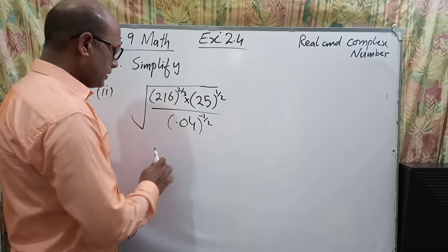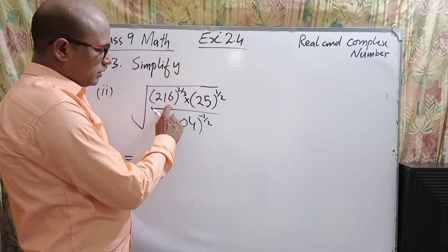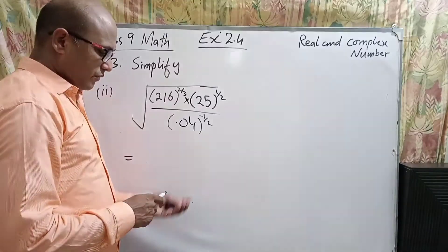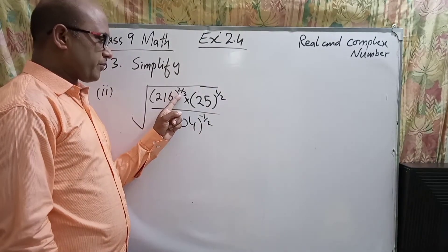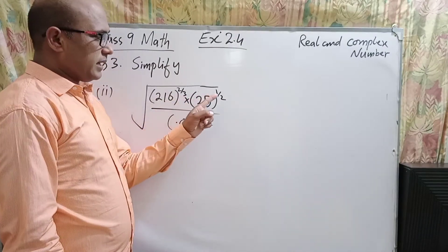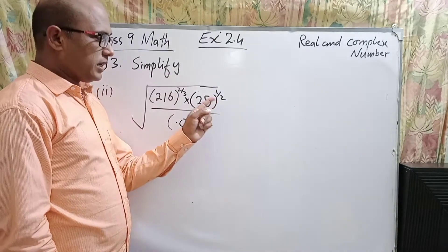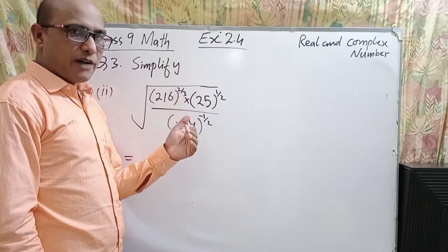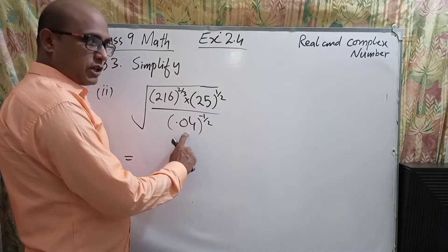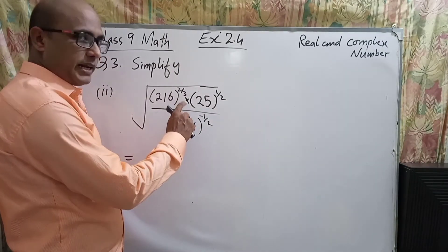First of all we have to watch carefully the numbers inside the brackets and check their exponents. The exponent of the first number is 2/3, the exponent of 25 is 1/2 — exponent means the power of a number — and the exponent of 0.4 is minus 1/2.